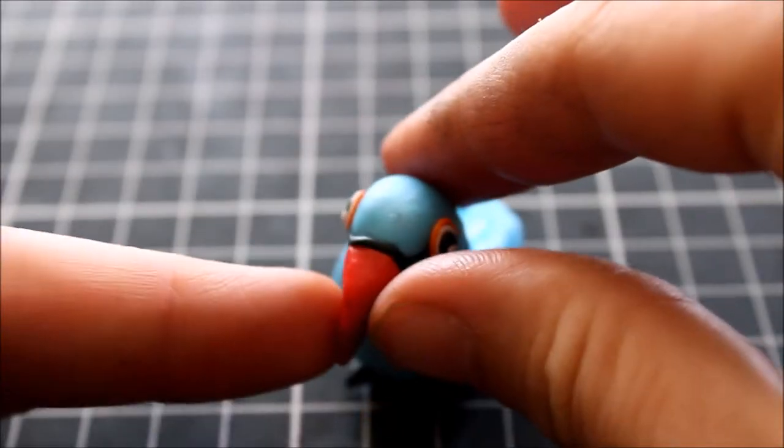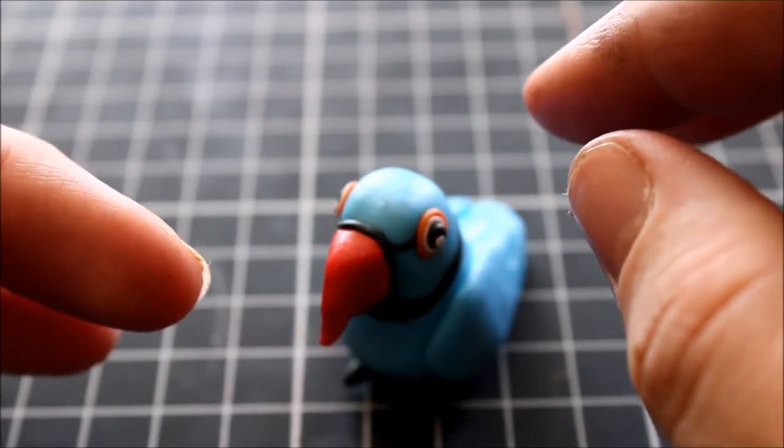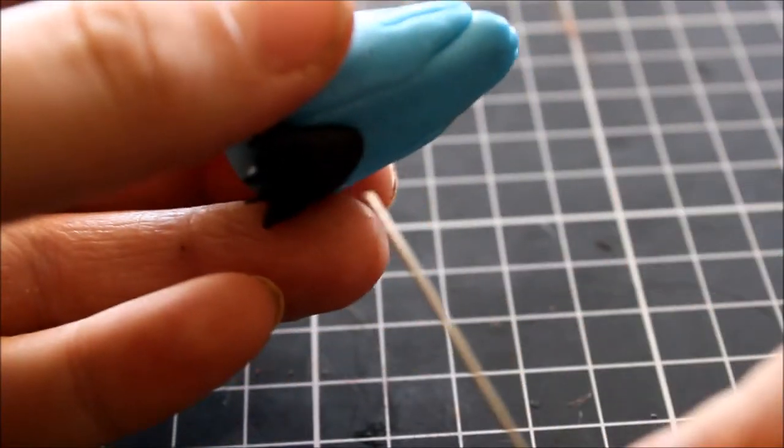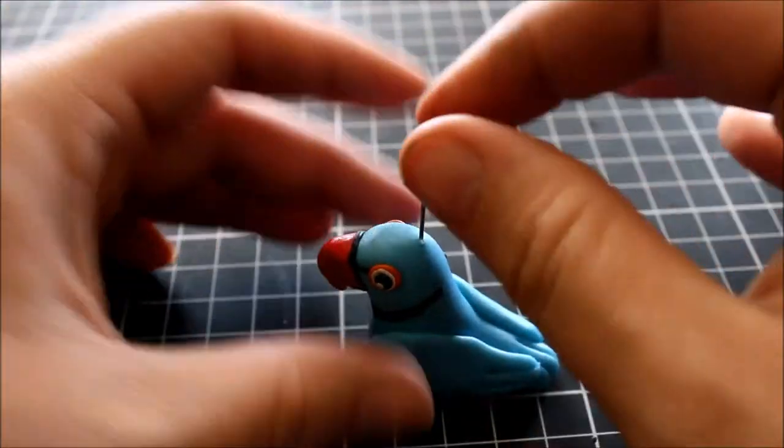Again, play around with the beak to reshape it, as it might have been knocked about a little bit. Then to finish off, you'll need to insert an eye pin very carefully, and then bake your clay according to your polymer clay's instructions and allow that to cool.